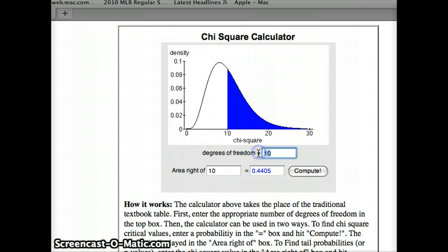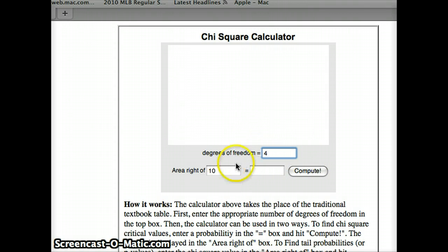Here we have four degrees of freedom. And we're looking for the area to the right of 92.711. Is that an extreme value for the test statistic chi-square?